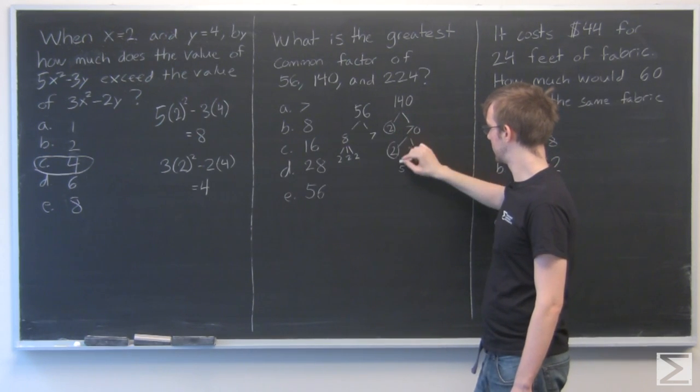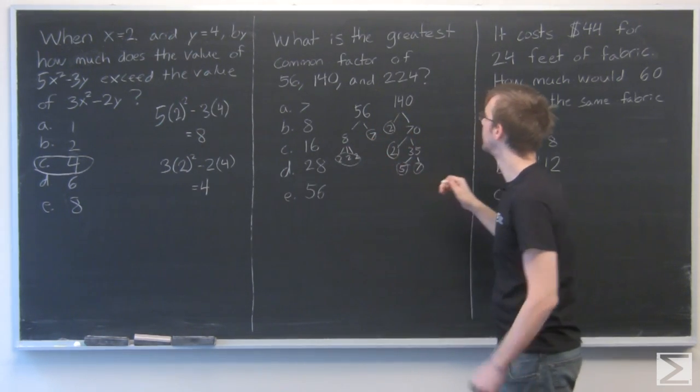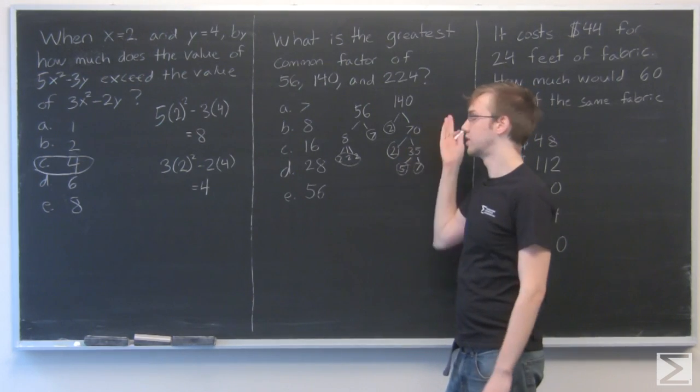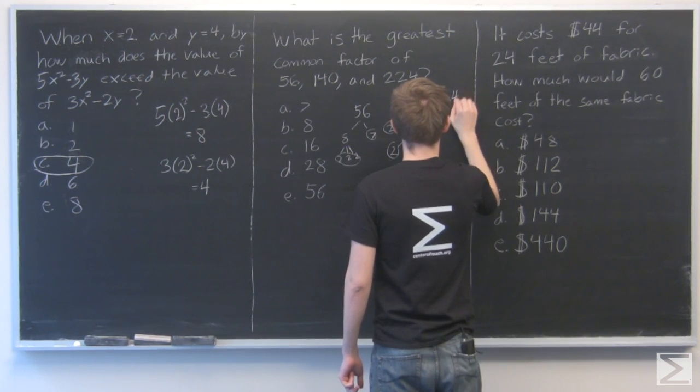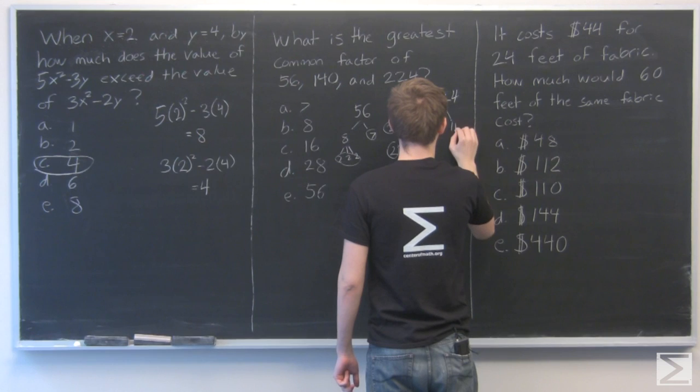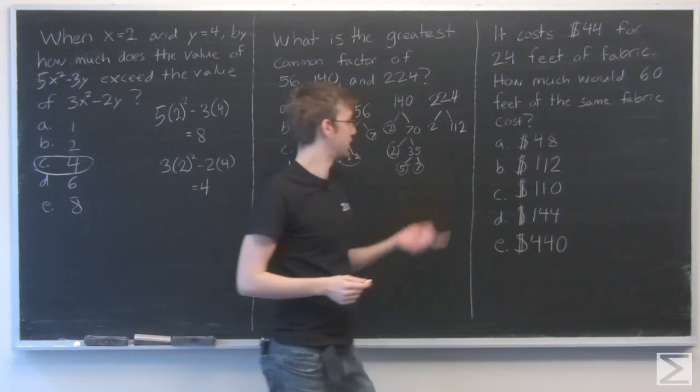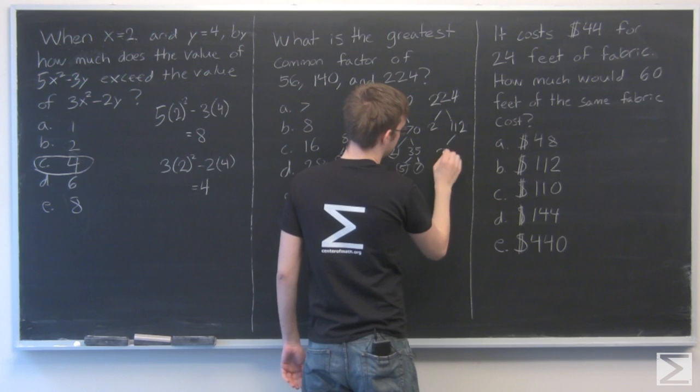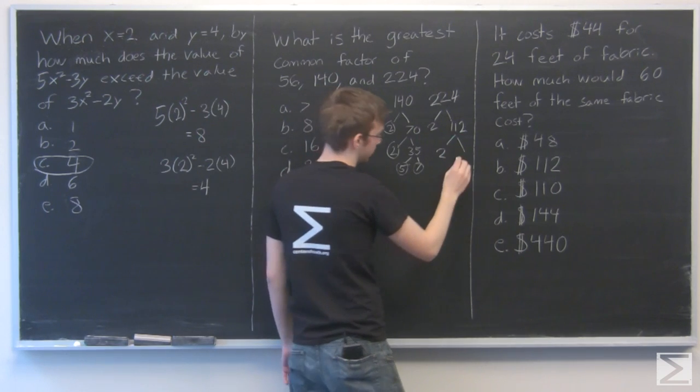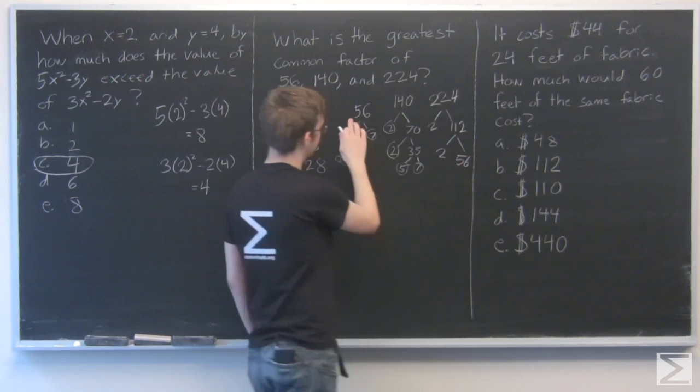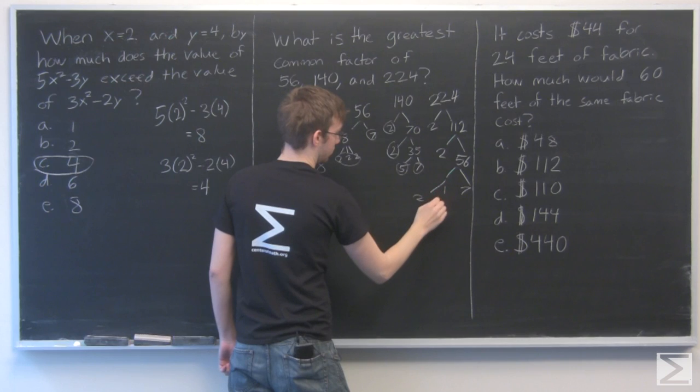So here we have 2, 2, 2, 5, 7. And here, of course, is 7 and 3 2s. Now 224. It's a pretty big number, but it's even, so let's start by dividing by 2. We just see it's 112, so let's divide by 2 again. Now I know 110 divided by 2 would be 55, so 112 would be 56. And look, that's the same as that. So this is just going to go down to a 7 and 2, 2, 2.